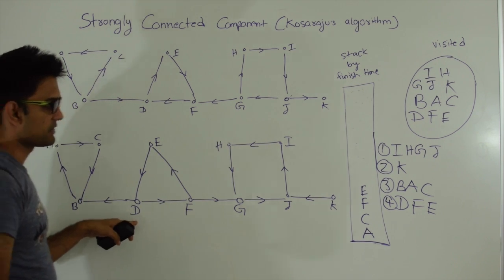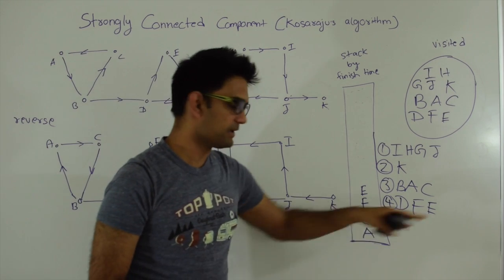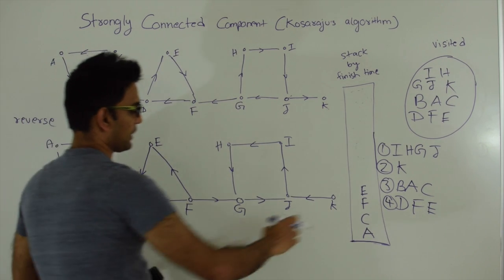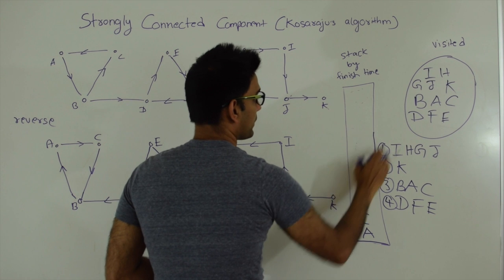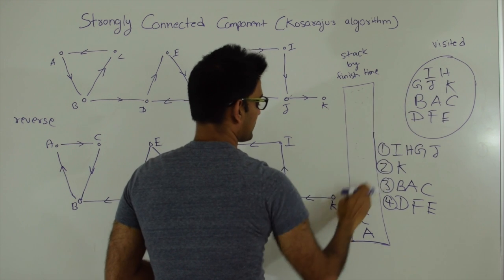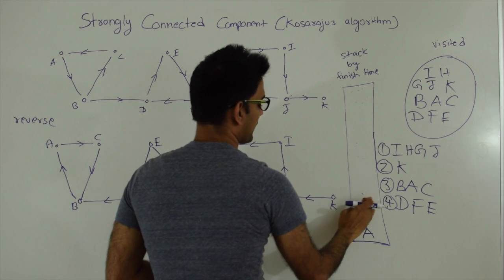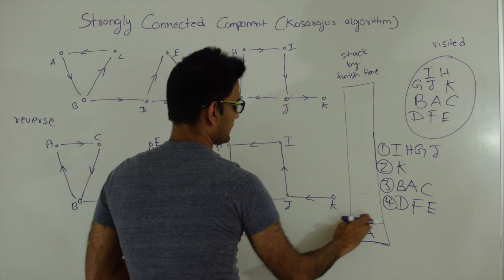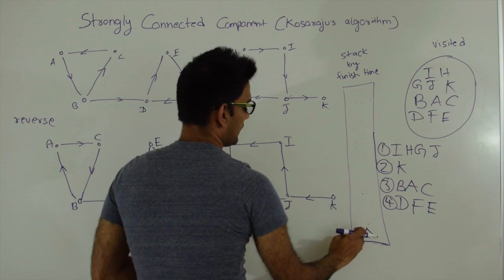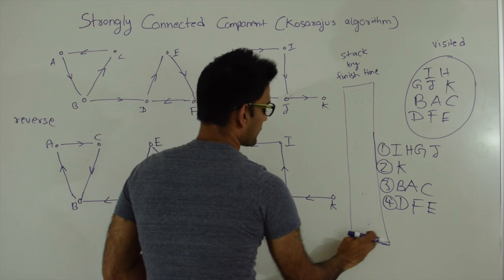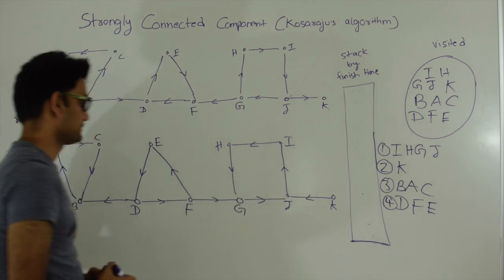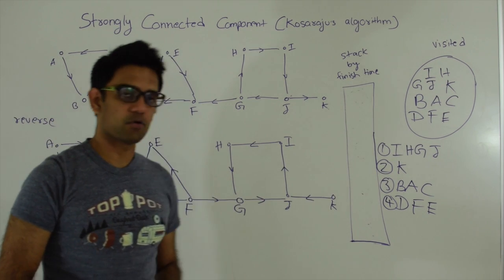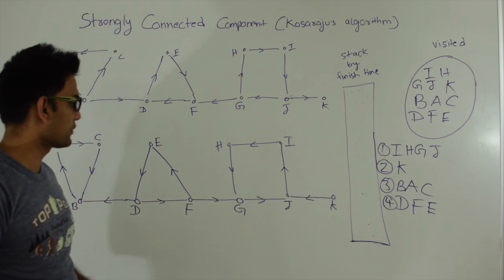D also has another child B but B is already visited. Then we pop out E, F, C, and A — all already visited. So these are our four strongly connected components: {I, H, G, J}, {K}, {B, A, C}, and {D, F, E}.